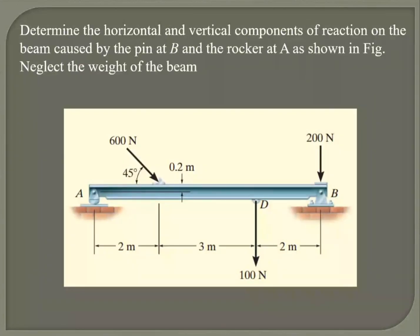Let's have a look. Determine the horizontal and vertical component of reaction on the beam caused by the pin. It's a pin joint and a rocker at A. Determine the horizontal and vertical component of reaction — basically, that's the support reaction. At A, let us see. It's a 2D problem.